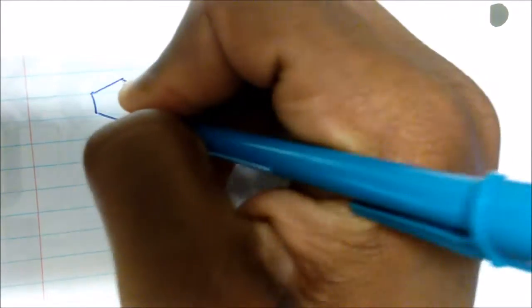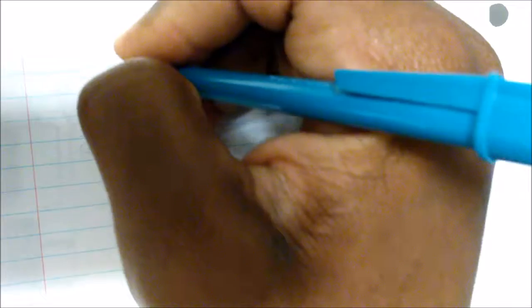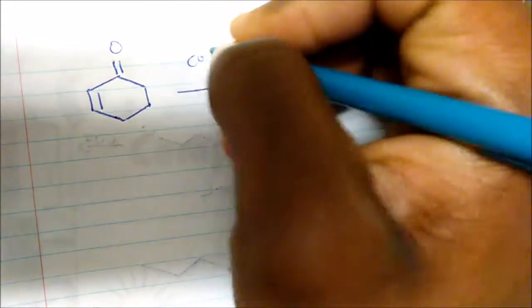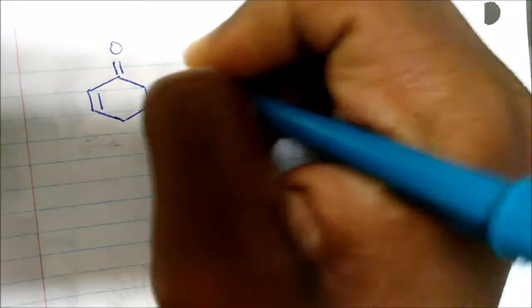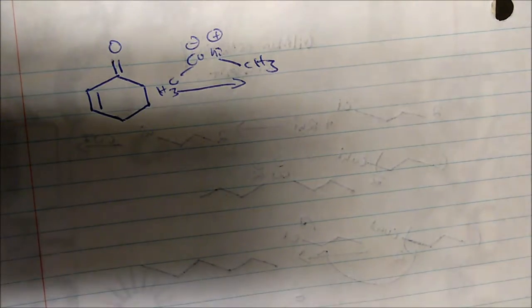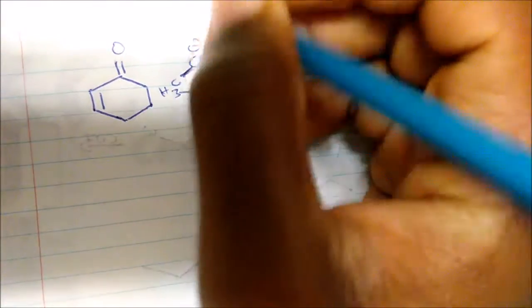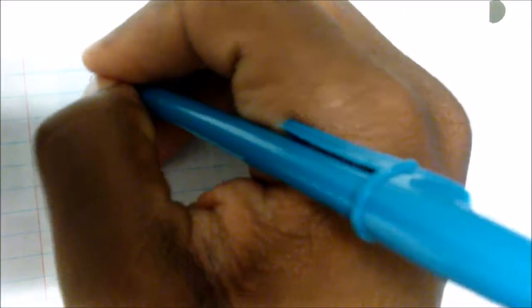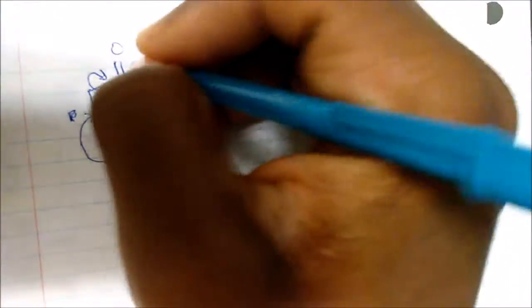This reaction is selective for the beta carbon. If we take this alpha-beta unsaturated ketone and react it with the Gilman reagent, these electrons serve as the nucleophile and attack the beta carbon. Once it attacks, the electrons are brought up to form a double bond, giving us the enolate resonance form of the structure.